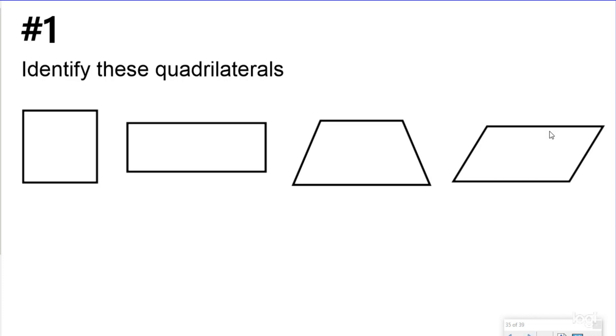So the first question says identify these quadrilaterals. What we want to do is use the attributes that we know for each quadrilateral to help us name it. I see right here that I have a quadrilateral with two pairs of sides that will never meet, four square corners, and all the sides are congruent, so this is a square. For my next quadrilateral, I see I have four sides, two pairs of sides that will never meet, and four square corners, but I don't see four congruent sides, which means this has to be a rectangle.